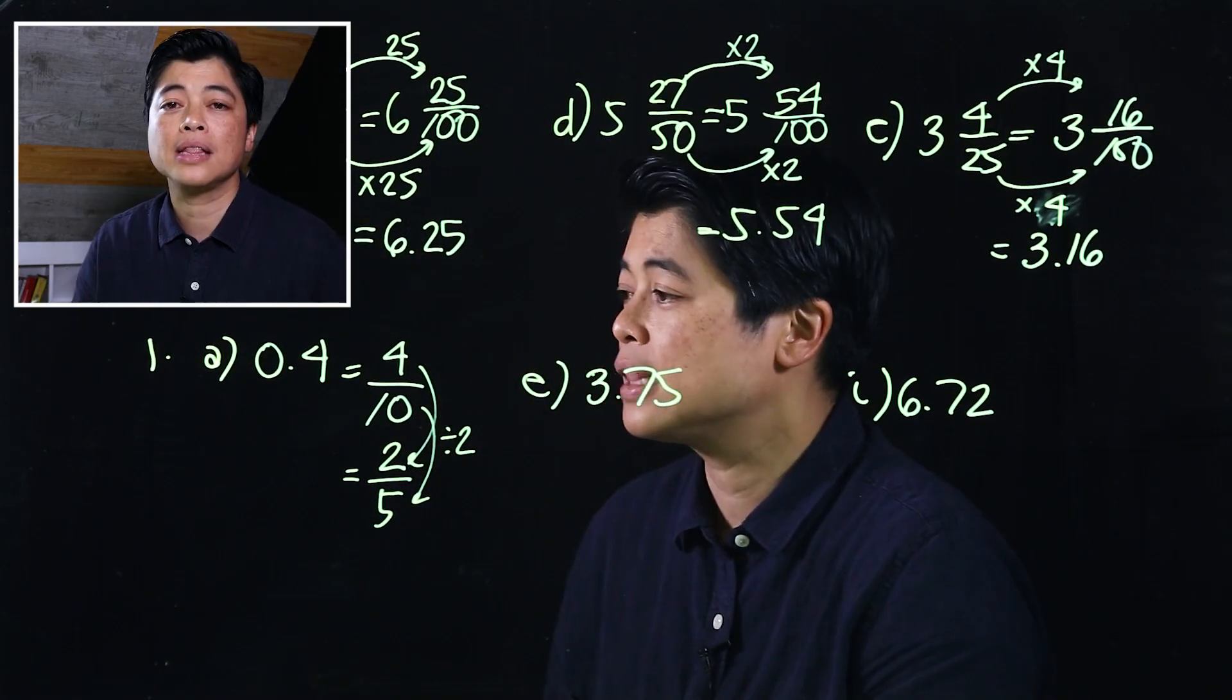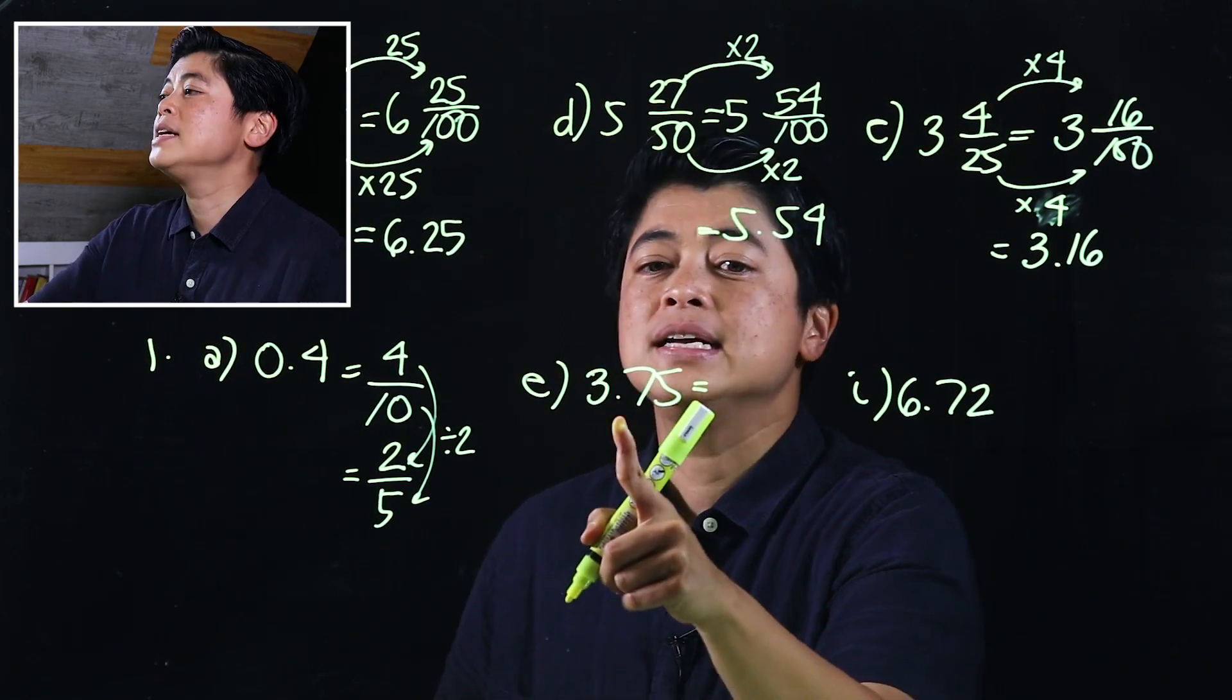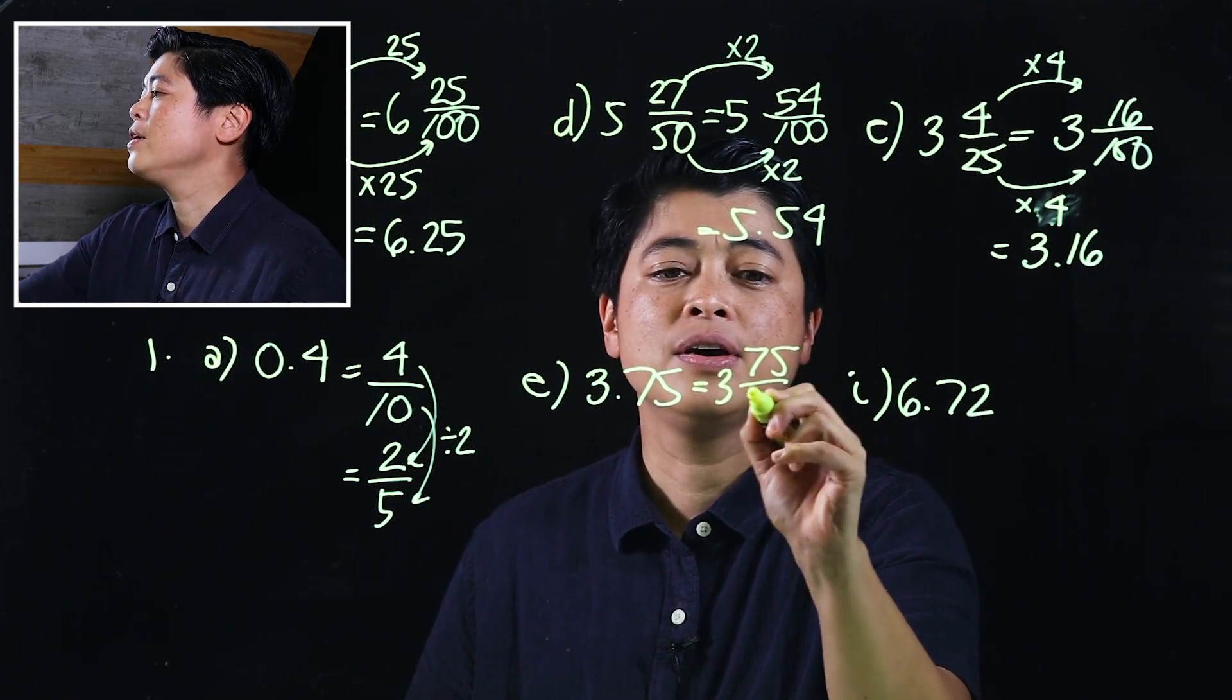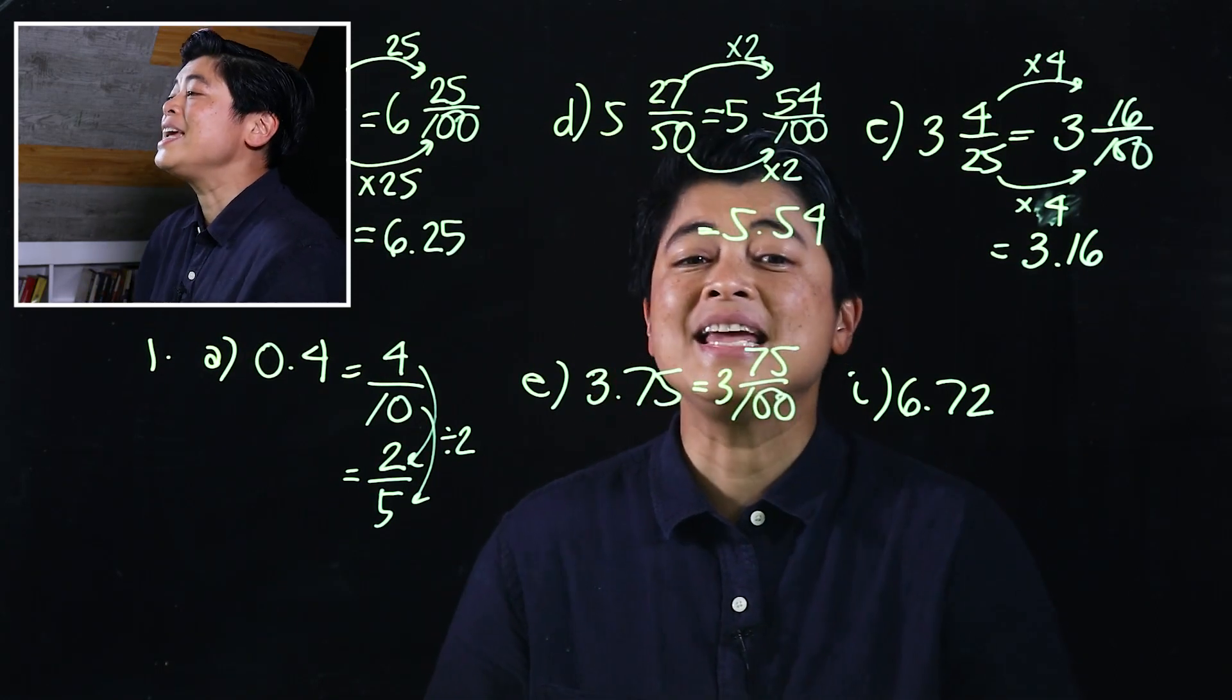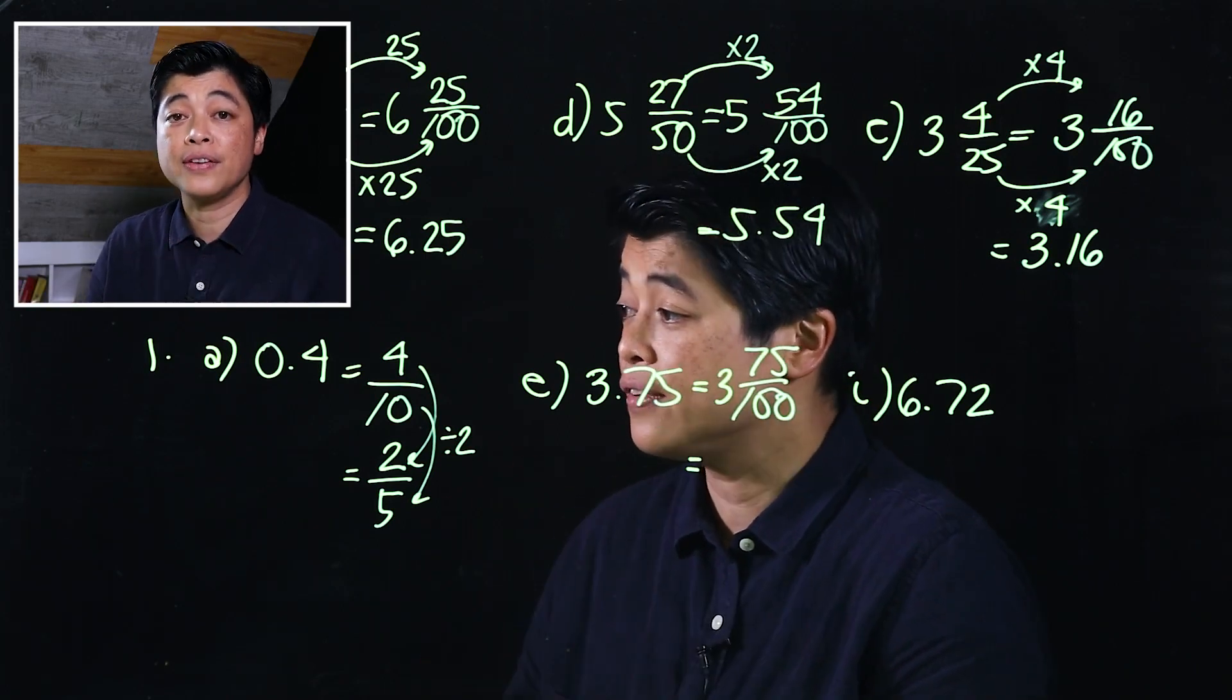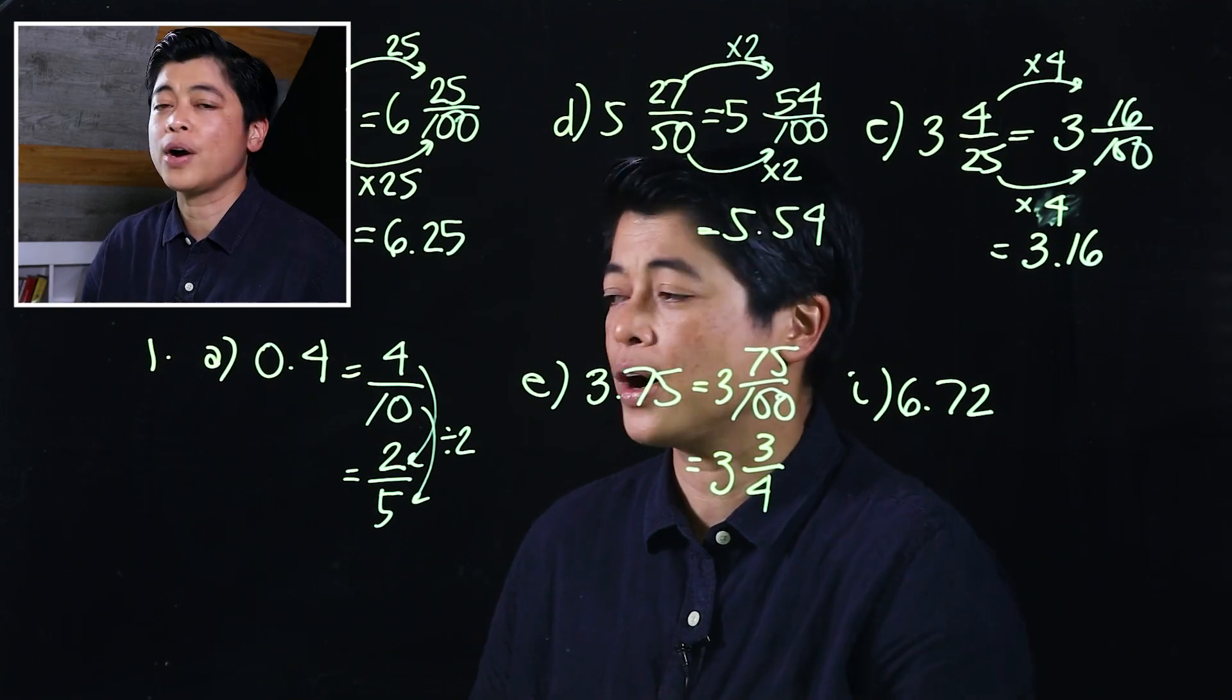The next one we read as 3 and 75 hundredths, so that would be 3 and 75 over 100. Clearly here, if we look at 25 goes into both of those, so they can count 25, 50, 75. That means this is 3 and 3 over 4. I'll repeat that: 25, 50, 75, 100 - those are the quarters.